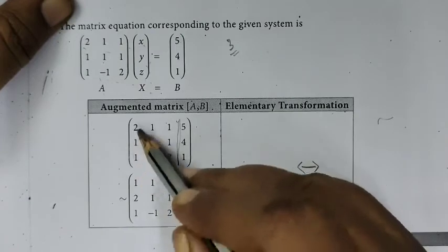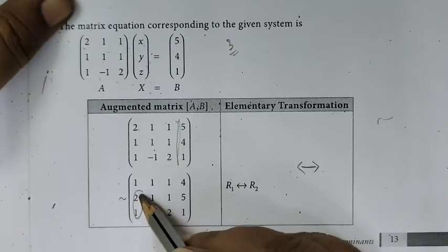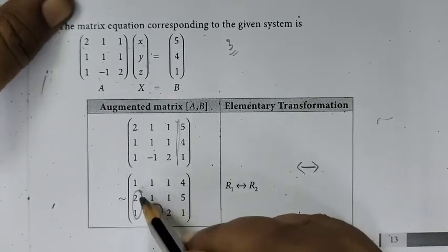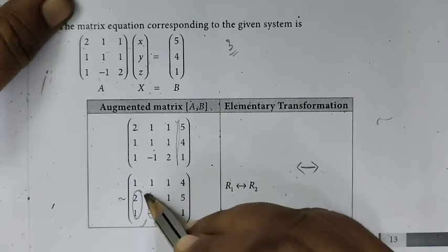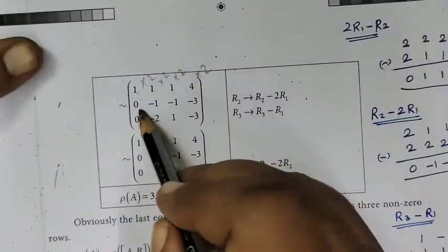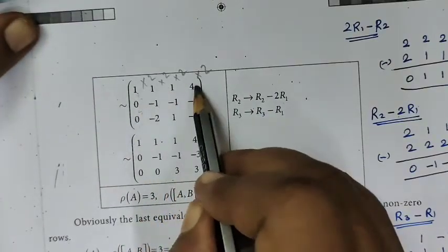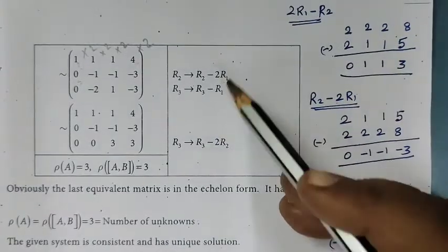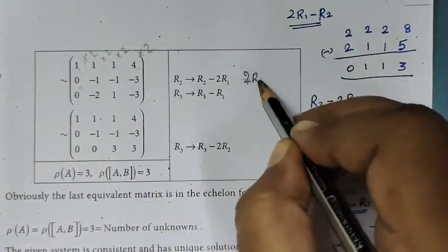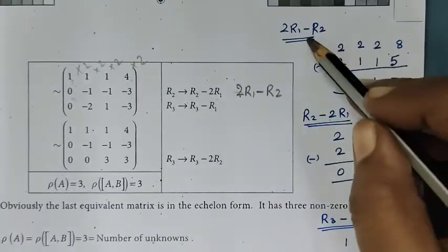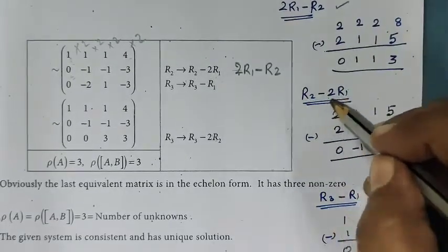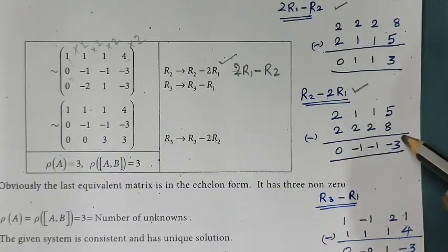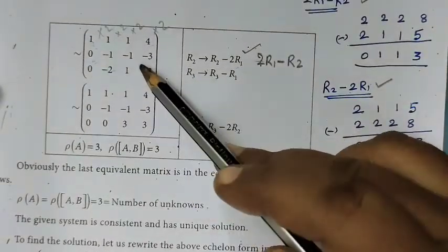Now we will multiply by 1. The first element becomes 0. If you multiply by 2R1, this becomes 0. The third element also becomes 0. So R2 minus 2R1: multiply 2 and multiply 2. You are getting minus 1, minus 1, minus 3.